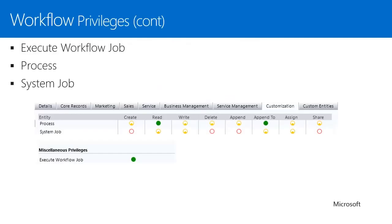Here's a list of workflow privileges. The process entity permissions determine what users can do — read at an organizational level means they see all on-demand workflows; business unit level means they only see on-demand workflows within their business unit. These permissions also control creating, deleting, assigning, and sharing workflows. The system job entity allows users to see when a workflow is triggered, creating a system job they can monitor for waiting, completed, or error states. The execute workflow job privilege allows users to actually execute an on-demand workflow.